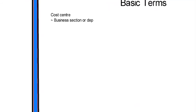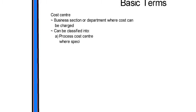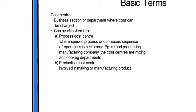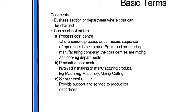Cost center is defined as a business section or department where cost can be charged. It can be classified into: process cost center, where a specific process or continuous sequence of operations is performed — for example, in a food processing manufacturing company, the cost centers are the mixing and cooking departments; and production cost center, involved in making or manufacturing a product — for example, machining, assembly, mixing, cutting.